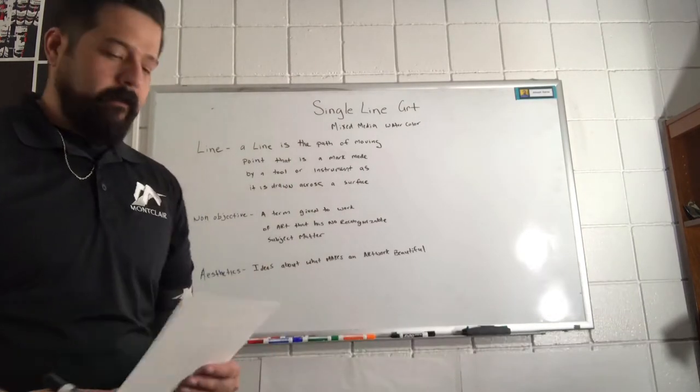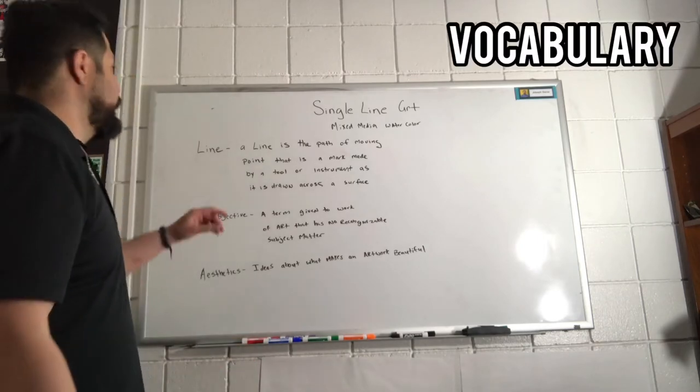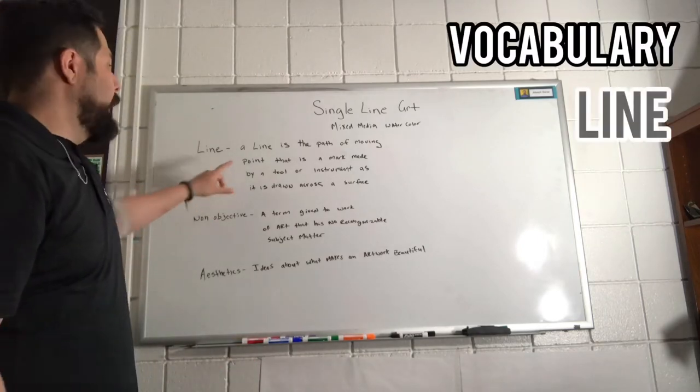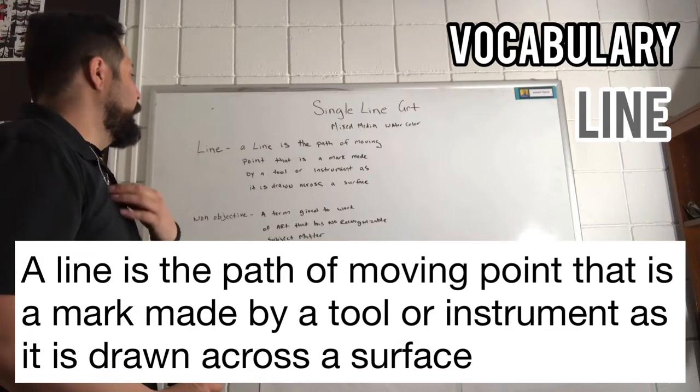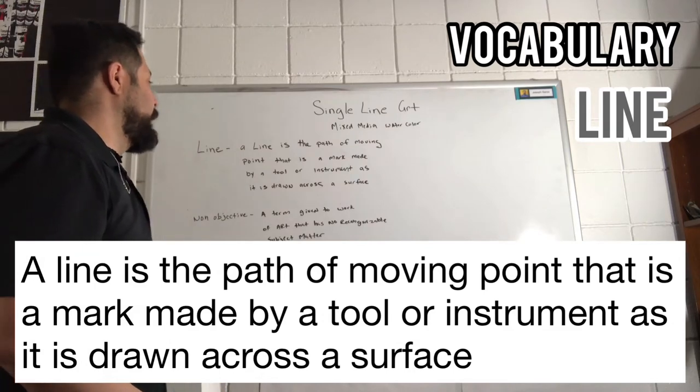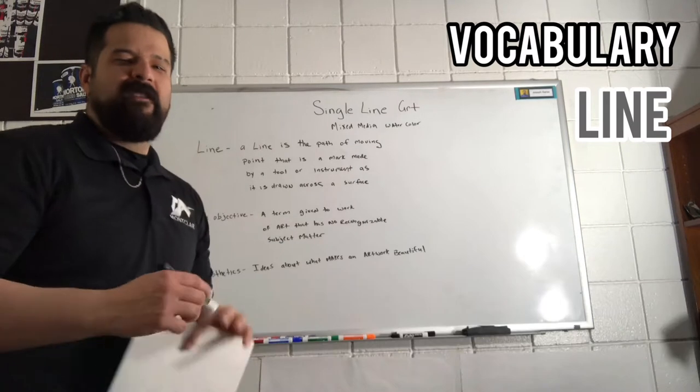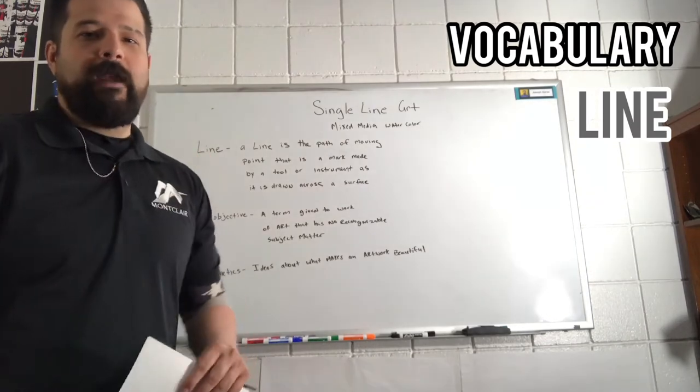The first thing we're going to be doing is learning the vocabulary words of the day, which is going to be the first one, line. A line is a path of a moving point that is made by a mark by a tool or instrument as it is drawn across a surface. So basically, if you put a pencil down and move it across the paper, you draw a line.